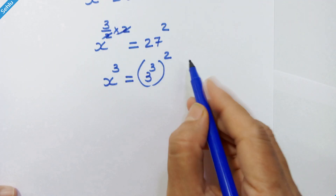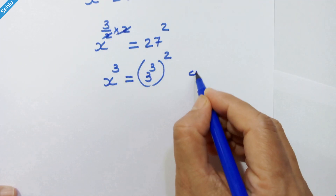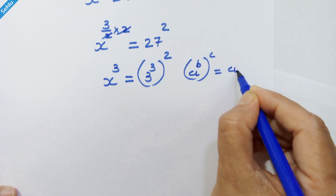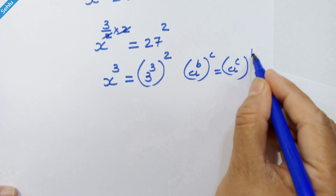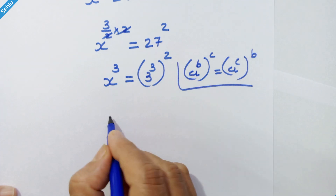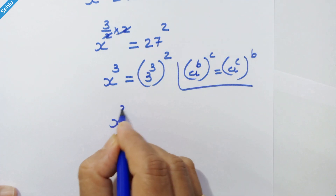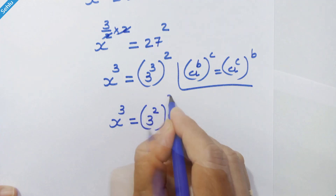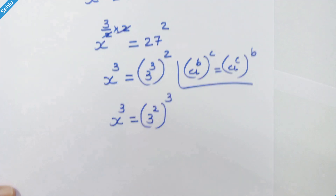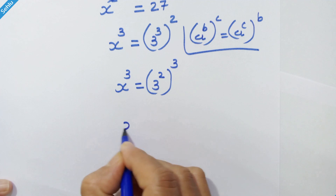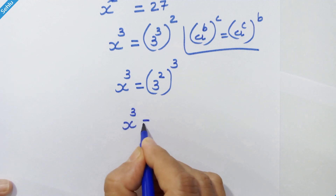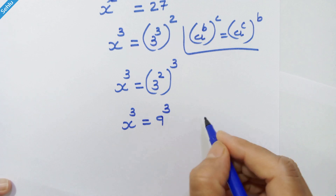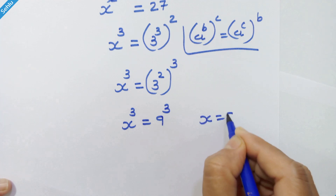Now we can flip this, because if we have a raised to b whole raised to c, then it can be a raised to c whole raised to b. So here we can write x cube is equal to 3 square whole cube. 3 square is 9, so x cube is equal to 9 cube. From here we can equate x is equal to 9.